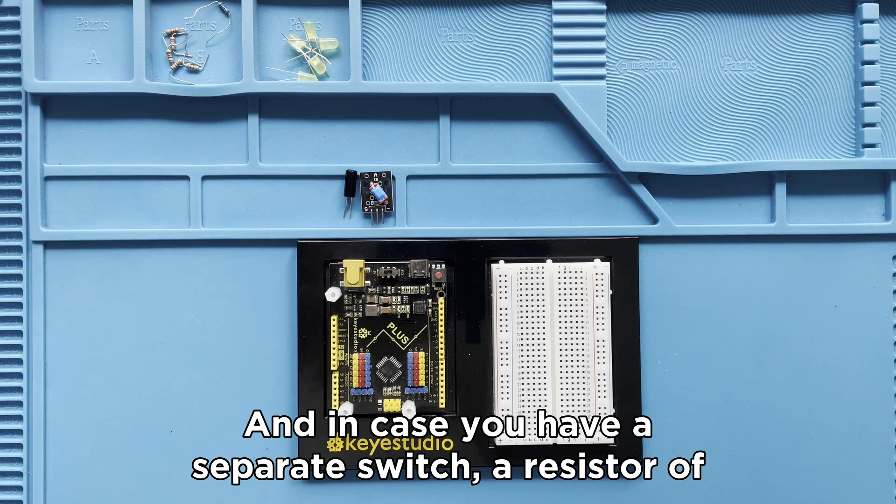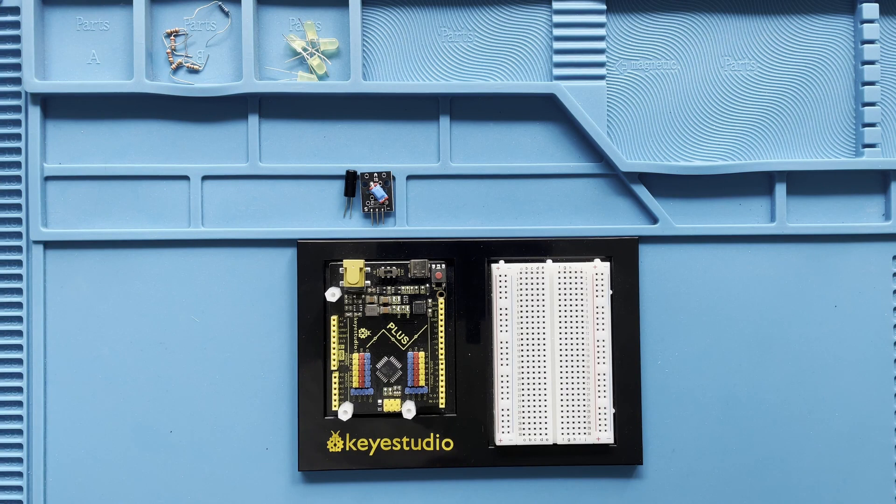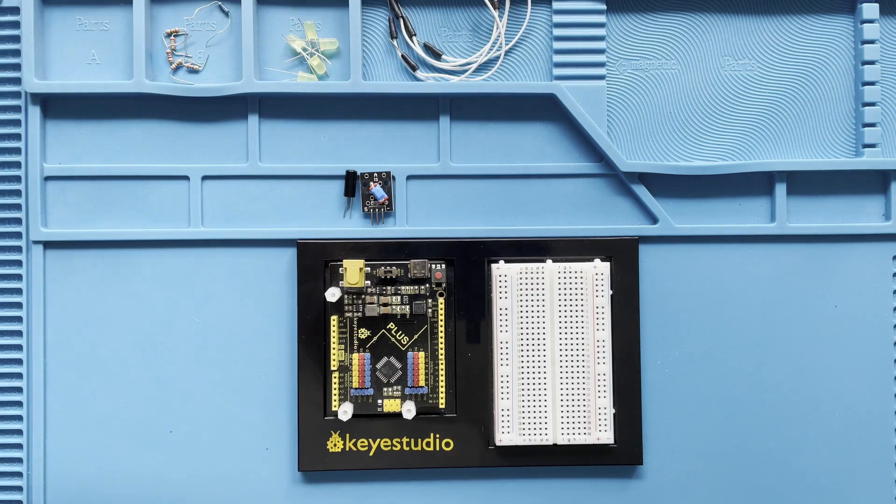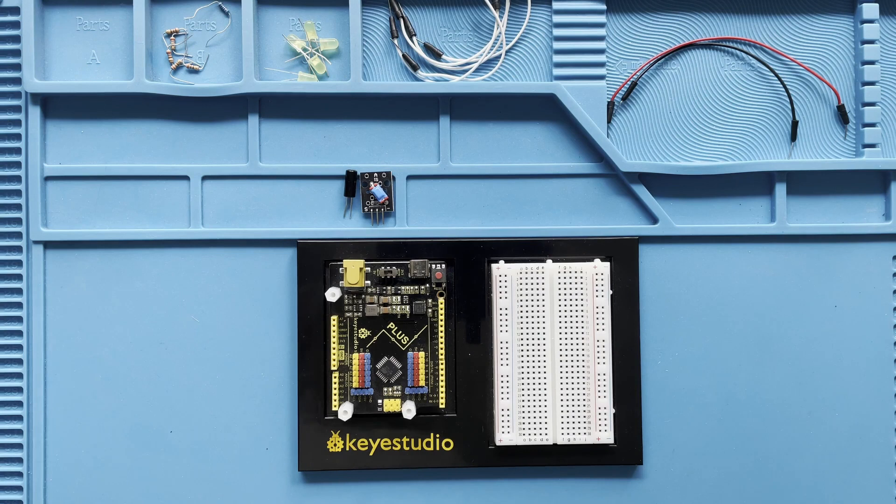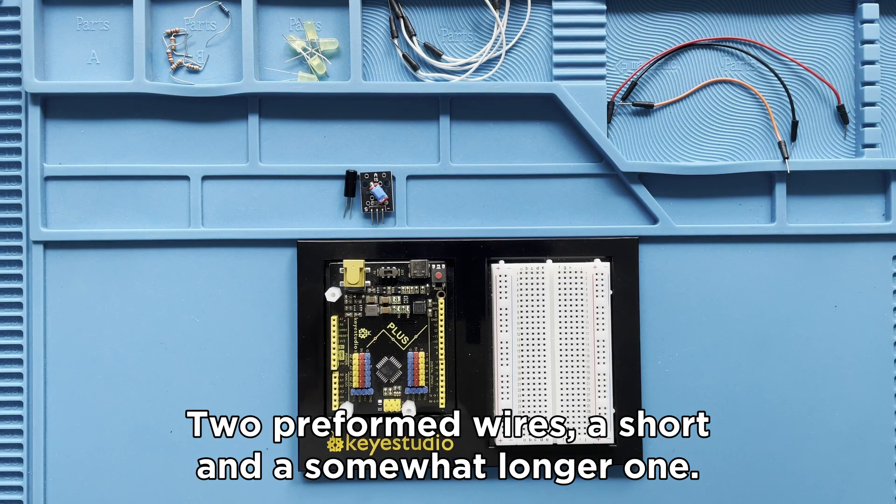Five white jumper cables, a red and a black jumper cable, an orange jumper cable, two pre-formed wires, a short and a somewhat longer one. And of course, let us not forget the most important part, the cardboard hourglass.